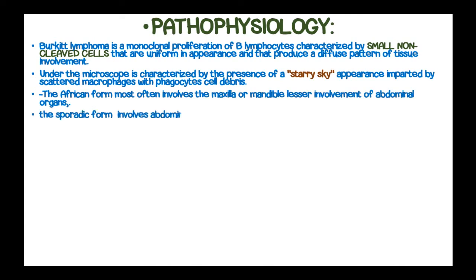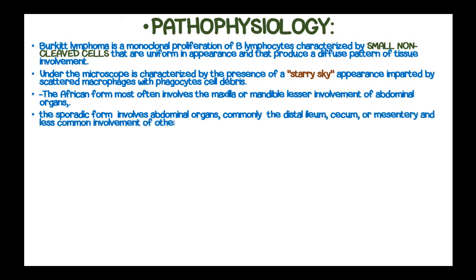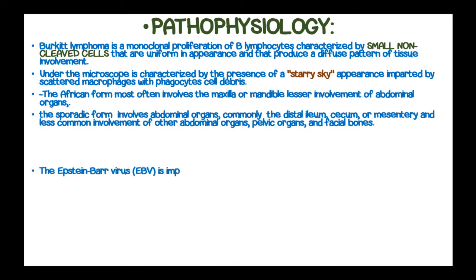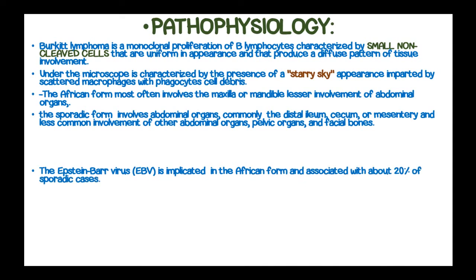The sporadic form involves abdominal organs, commonly the distal ileum, cecum, or mesentery, with less common involvement of other abdominal organs such as pelvic organs and facial bones. The Epstein-Barr virus (EBV) is implicated in the African form and is associated with about 20% of sporadic cases.